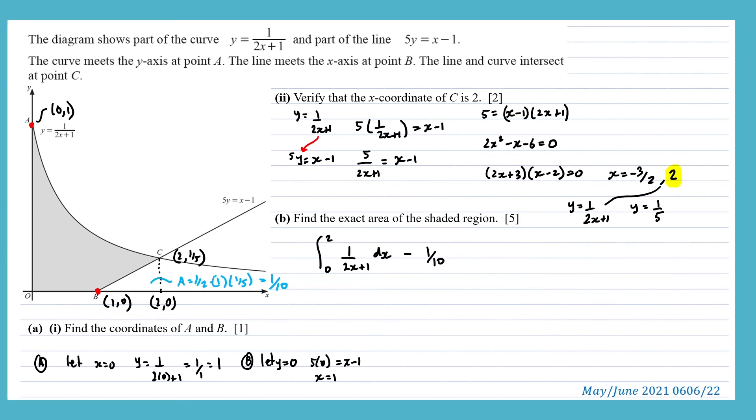When we integrate 1 over 2x plus 1, we'll get a half natural log 2x plus 1. And we evaluate that between 2 and 0. And then we subtract our 1 tenth from that. So we'll have a half times natural log, 2 times 2 is 4 plus 1 is 5, minus natural log, 2 times 0 is 0, 0 plus 1 is 1, minus 1 tenth.